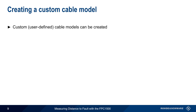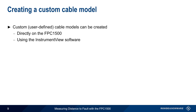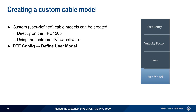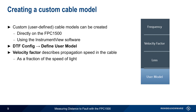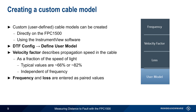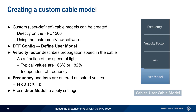It's also possible to create custom or user-defined cable models. This can be done directly on the FPC itself, or it can be created on a PC using the free Instrument View software. To create a model on the FPC, press DTF Config and then Define User Model. There are three configuration parameters. Velocity factor describes the speed of propagation in the cable, which is specified as a fraction of the speed of light — typical values are around 66% or, less often, 82%. This value is independent of frequency. The cable loss, or attenuation, is specified as paired values of frequency and attenuation — that is, N dB at X Hertz. The FPC will interpolate between the entered values. When done, press User Model to apply settings. The result display will also show that a user cable model has been applied.